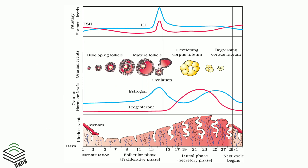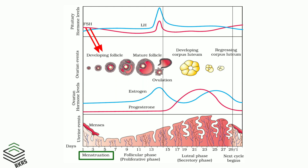The menstrual cycle starts with menstrual bleeding, and this phase is called the menstrual phase. It lasts for about the first five days of the cycle. During this phase, the levels of pituitary gonadotropic hormones are slightly elevated, especially FSH. This FSH acts on the ovarian follicles, triggering their development and maturation. The developing follicles begin to produce small amounts of estrogen.